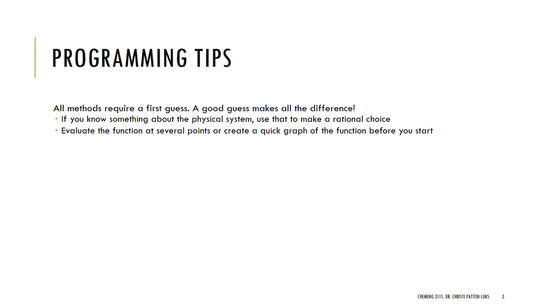Now let's look at a few programming tips. All of these methods require at least one first guess maybe two first guesses. I'm going to tell you that a good guess makes all the difference. You should try this on your own. Take some of the answers where we started with something and you got it to converge and it all seemed great. Try putting in different values. Go into it blind without knowing what the first guess is and some of those are just going to be a disaster at that point.